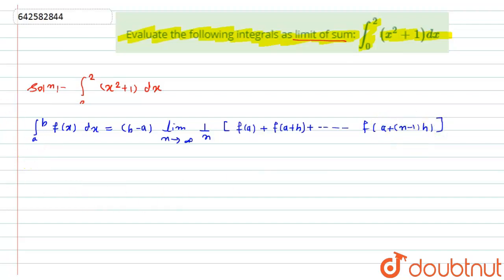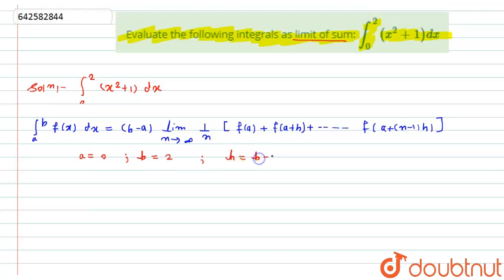So according to this formula, the value of a will become 0 and the value of b will be 2. Hence h will become (b minus a) divided by n, which equals (2 minus 0) divided by n, which equals 2 by n.